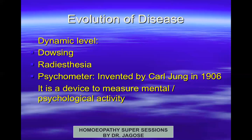Dowsing is done using a small pendulum attached to a string or chain along with a dowsing chart. If the patient is not present, a photograph can be placed on the chart. The dowser holds the pendulum over the photograph, keeps his hand steady, and asks the pendulum what is wrong with the patient. The pendulum moves clockwise or anticlockwise and stops at a point on the chart, indicating an area such as the respiratory system or thorax.